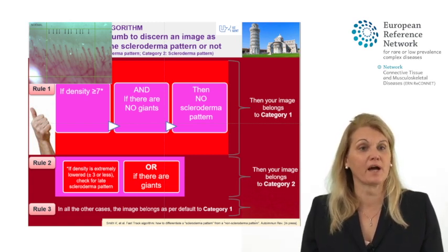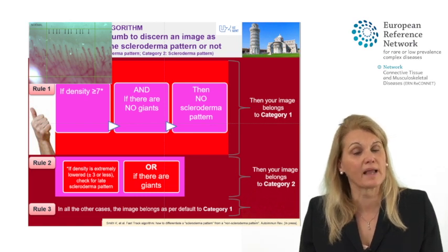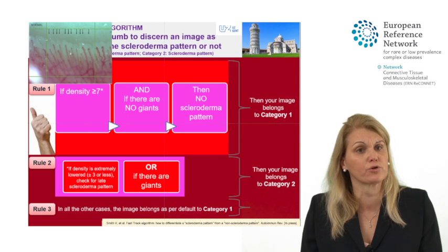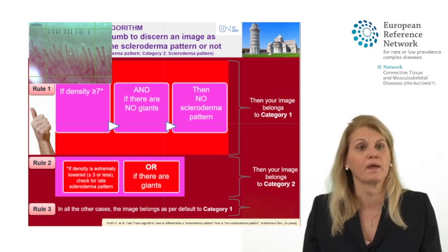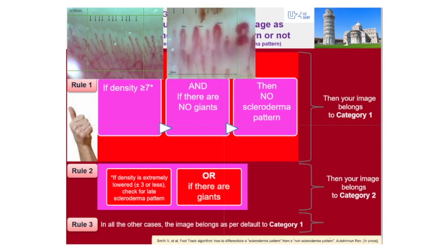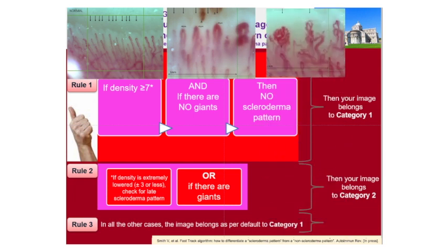Rule number two: if your image contains giant capillaries — remember, capillaries with an apical diameter of at least 50 micrometers and a normal shape or normal morphology — or if you have the combination of a very low density, more specifically three or fewer capillaries, combined with abnormal shapes, then you may safely call your image a scleroderma pattern. It belongs to category two.